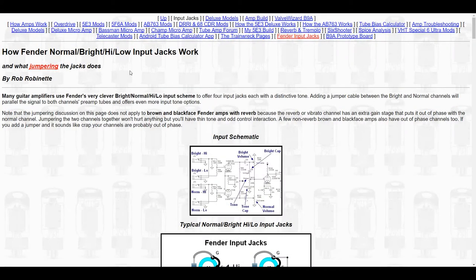One of the things I did mention is I wanted to cover a little bit about how the Fender typical high-low or normal bright channels and jacks work. So this is a really cool website in general, robrobinette.com, R-O-B-R-O-B-I-N-E-T-T-E.com. He has a lot of really cool stuff, but one of the things here is this input jack section. You can see it's at the top of his page here.